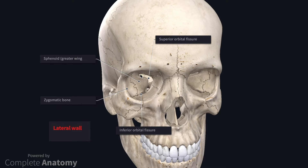The superior orbital fissure allows for communication between the middle cranial fossa and the orbit. The inferior orbital fissure allows for communication between the pterygopalatine fossa and the orbit. These fissures allow for nerves and vessels to reach the orbit.